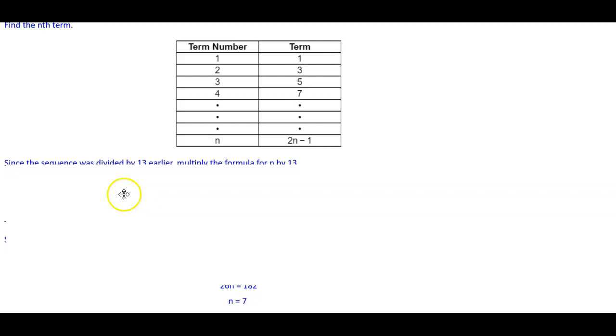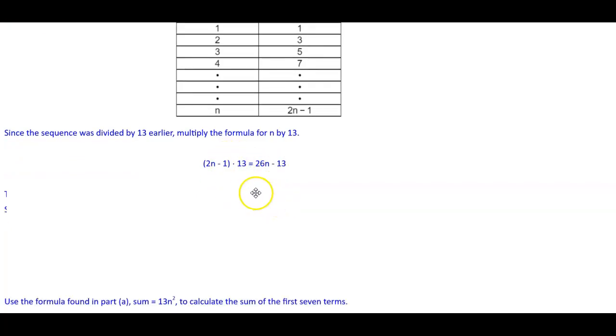Since the sequence was divided by 13 earlier, we want to multiply the formula by 13. We're going to take 13 and multiply it by 2n minus 1. We're going to distribute the 13 to both terms. 13 times 2n is 26n, and 13 times minus 1 is minus 13. Now we have 26n minus 13.